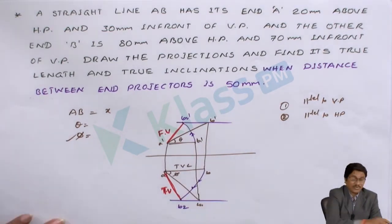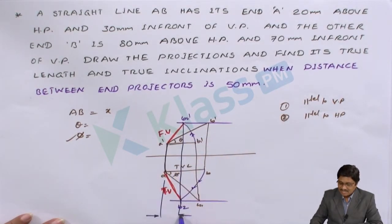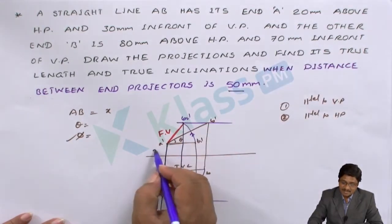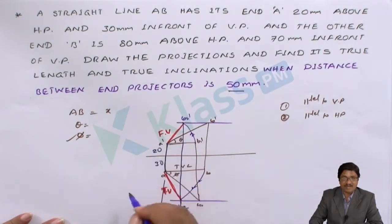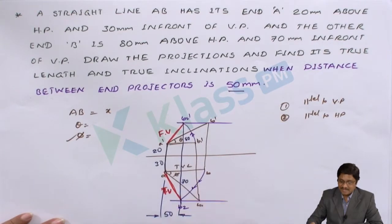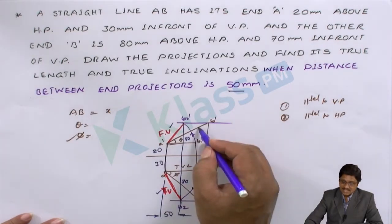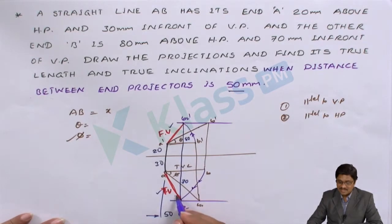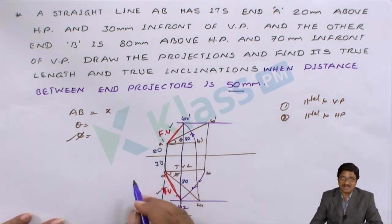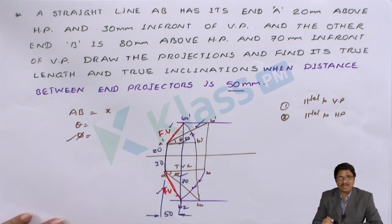Now you understand the logic. What is the current task? This is one endpoint, this is the other endpoint. The distance between the projectors — 50 mm — has been given in this problem. Also, the endpoint condition: A is 20 mm above and 30 mm in front; the other end B is 80 mm above and 70 mm in front. So indirectly the front view and top view have been given. It is asking to find the true length and true inclination — meaning we need to make the reverse journey.